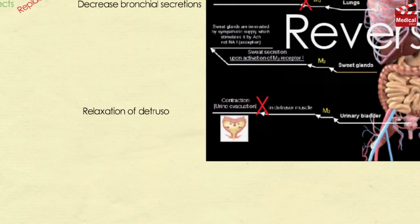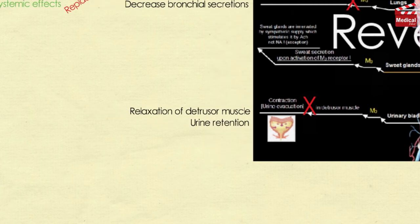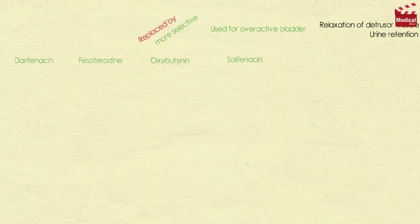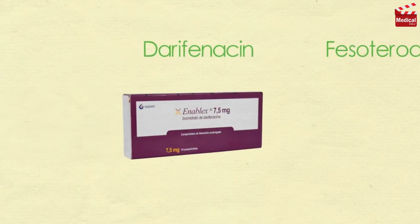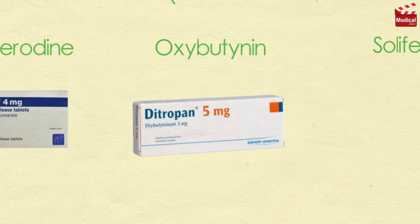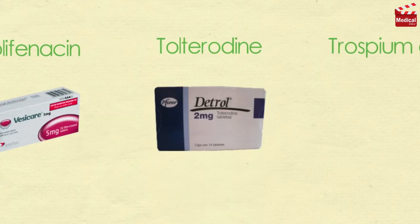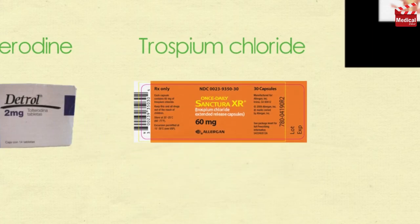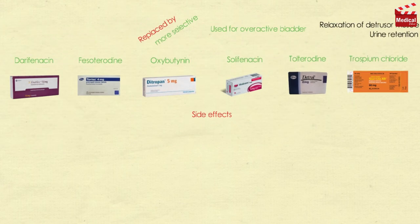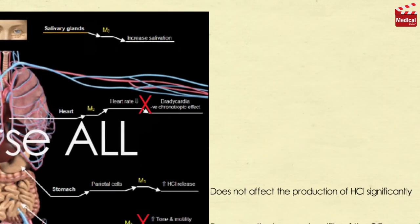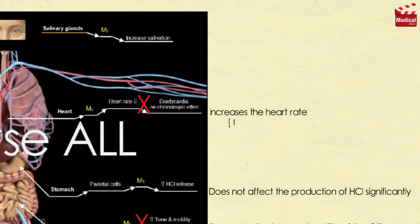Atropine causes relaxation of the detrusor muscle of the urinary bladder, causing urine retention, so it can be used for overactive bladder. It has been replaced by agents selective to muscarinic receptors in the bladder such as darifenacin, fesoterodine, oxybutynin, solifenacin, tolterodine, and trospium chloride, known commercially as Enablex, Toviaz, Ditropan, Vesicare, Detrol, and Sanctura respectively — but they still have some side effects including dry mouth, constipation, and blurred vision.